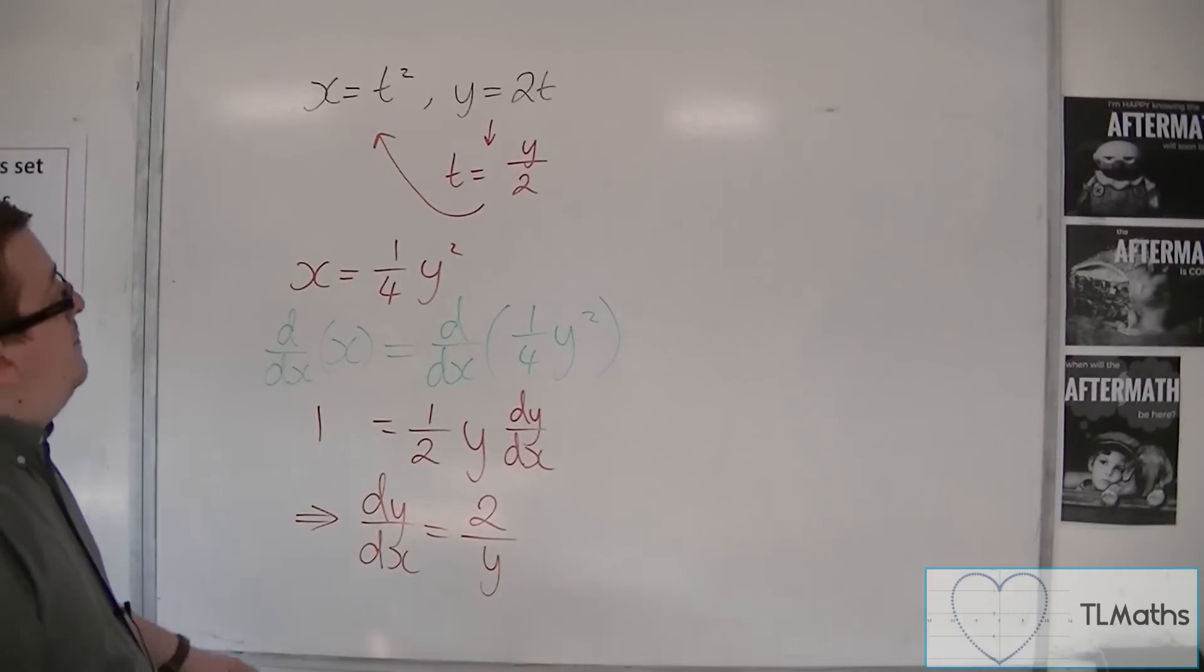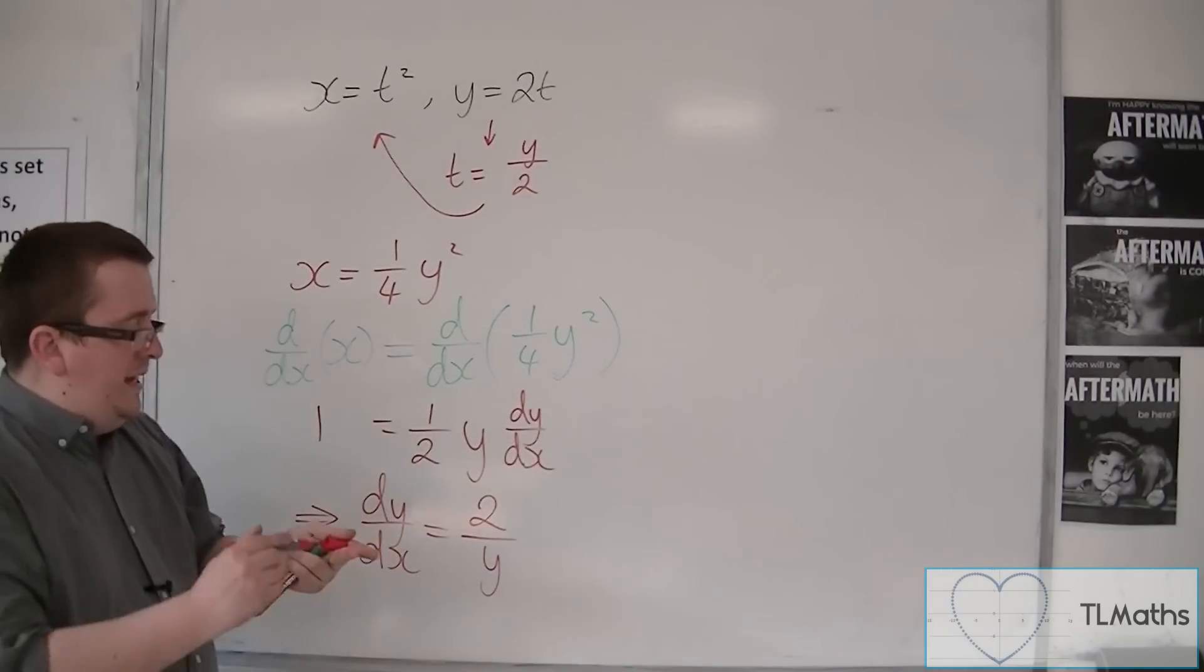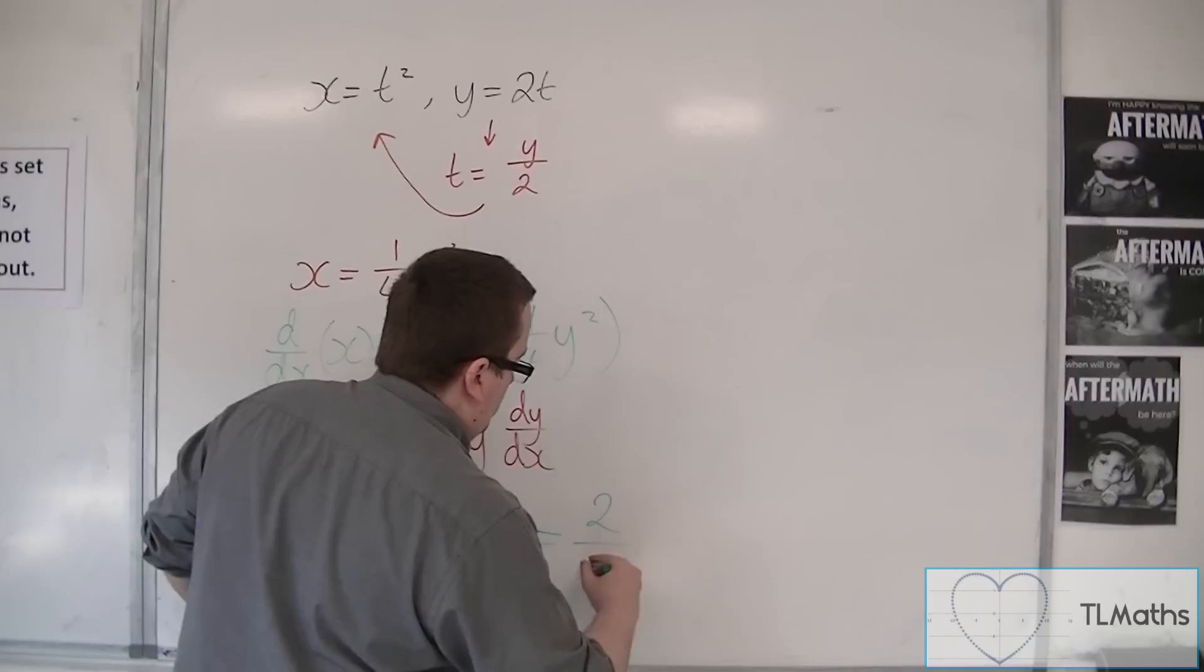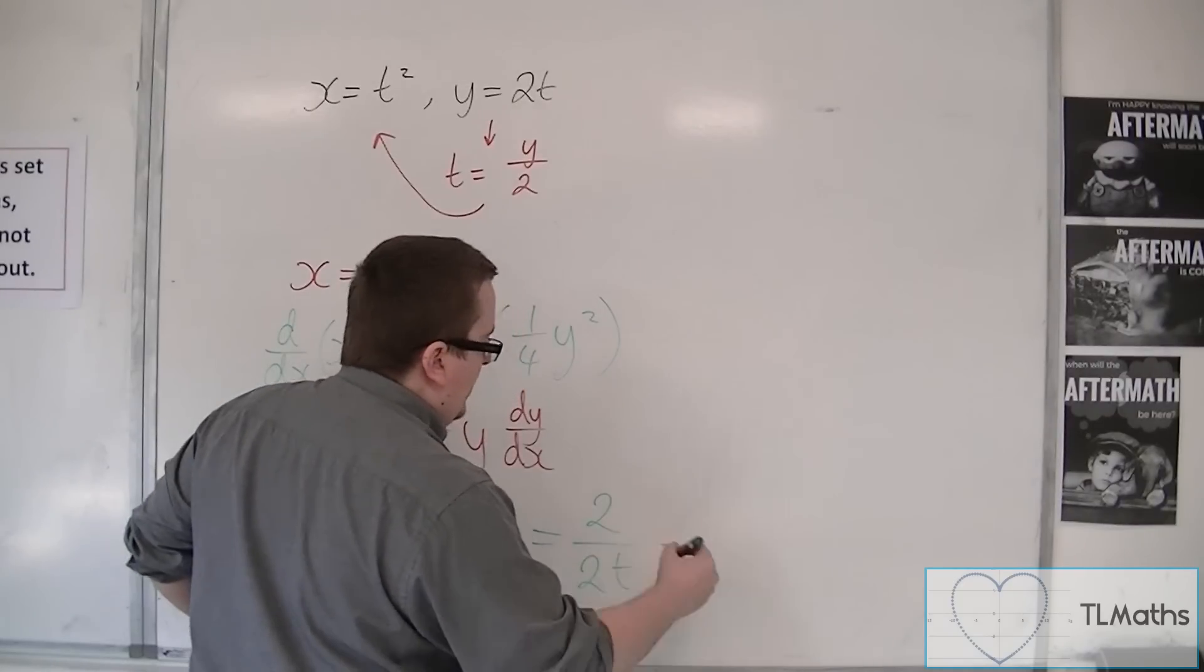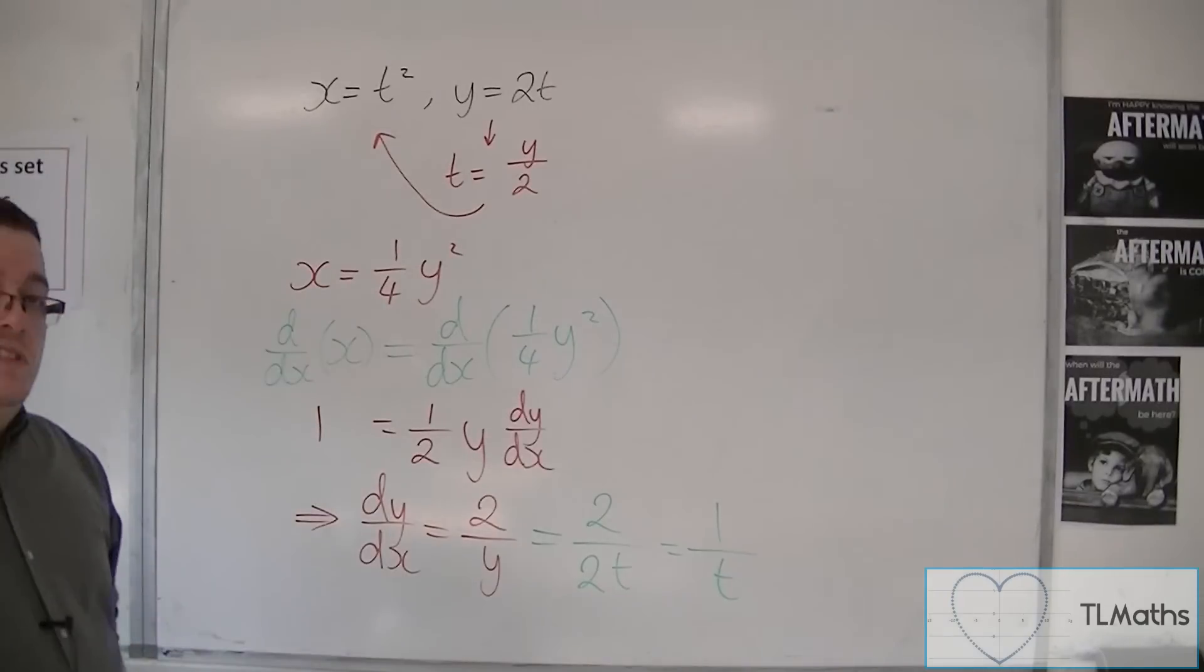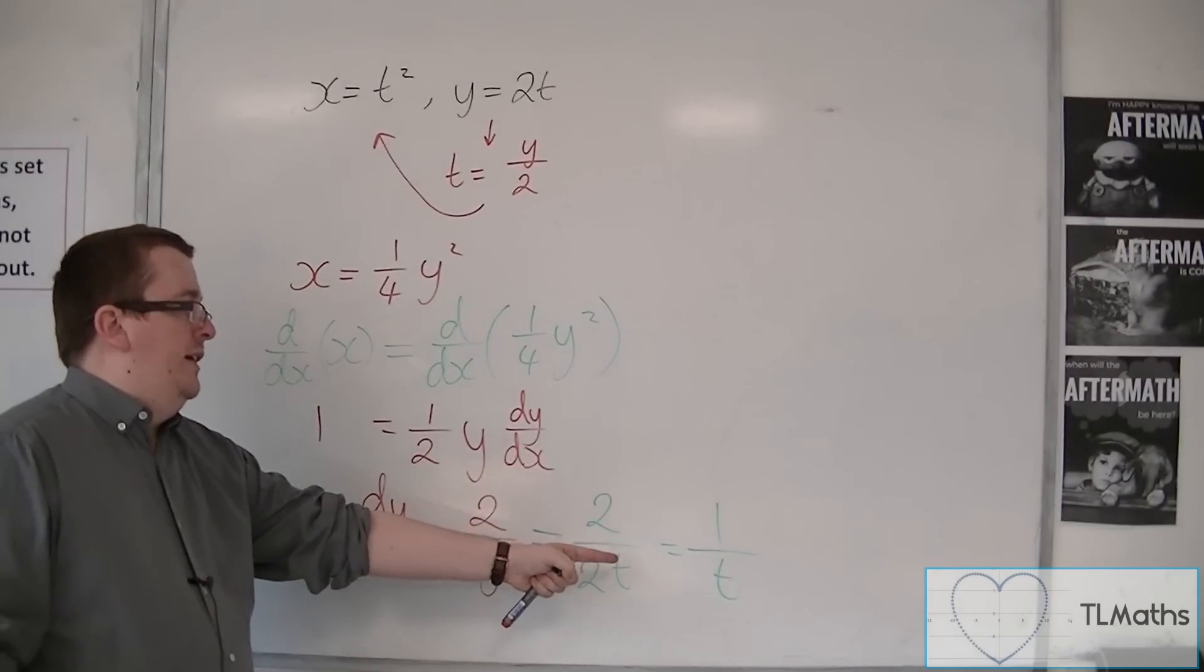And then I could put that back in terms of t because y is equal to 2t. So this is 2 over 2t. The 2s can cancel, and so you can write that as 1 over t. So dy by dx is 1 over t.